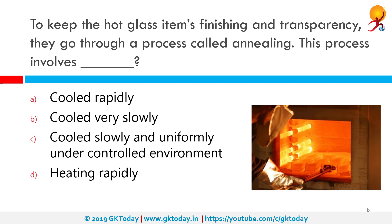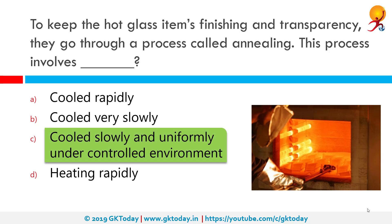To keep hot glass items' finishing and transparency, they go through a process called annealing. This process involves cooling down slowly and uniformly under a controlled environment. Annealing in metallurgy and material science is a heat treatment that alters the physical and sometimes chemical properties of a material to increase its ductility and reduce its hardness, making it more workable.